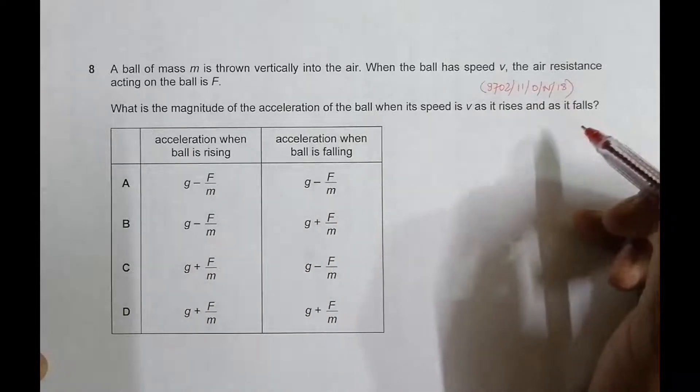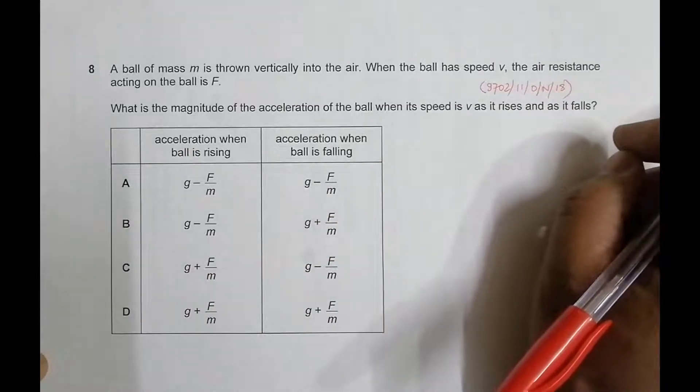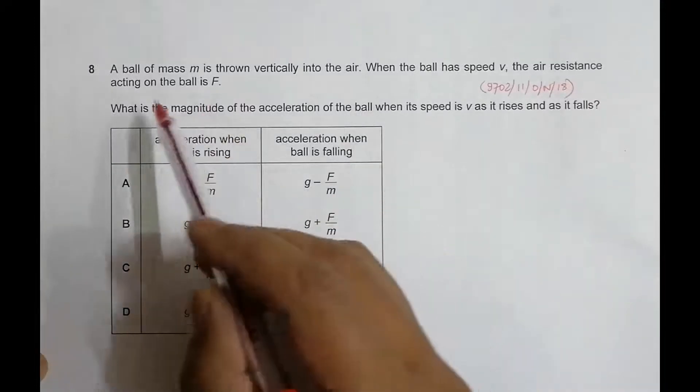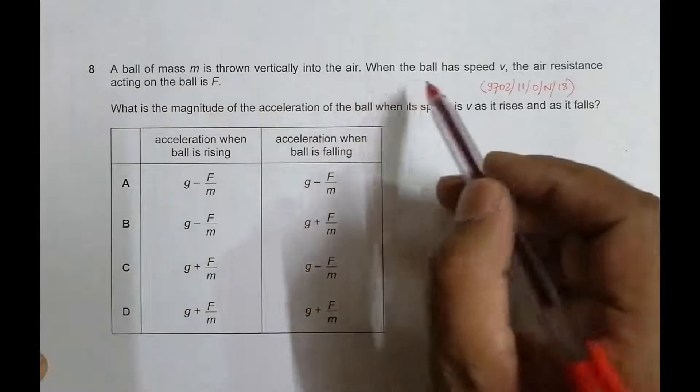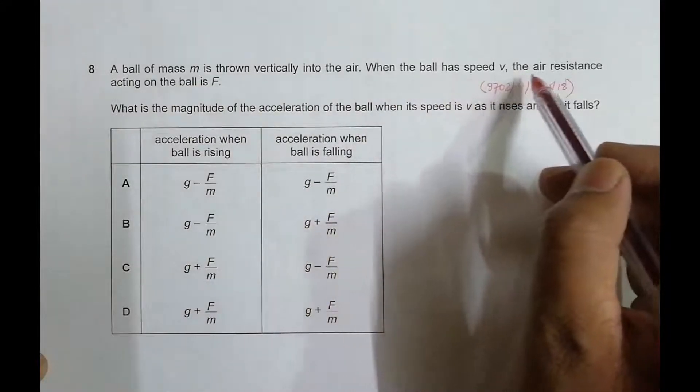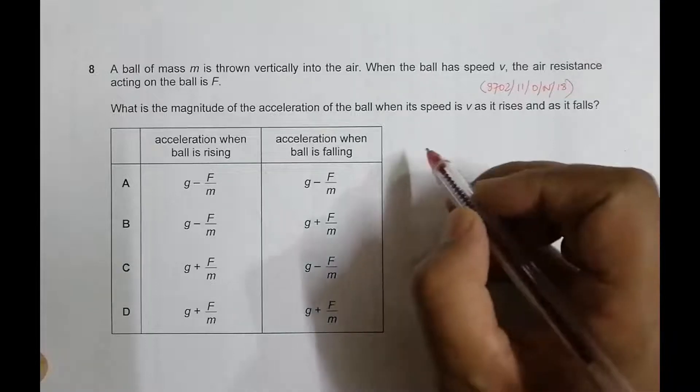So it's concerned with kinematics or even we can relate this to forces as well. It says a ball of mass M is thrown vertically into the air. When the ball has speed v, the air resistance acting on the ball is F. So what we have to remember here is when a ball is thrown...